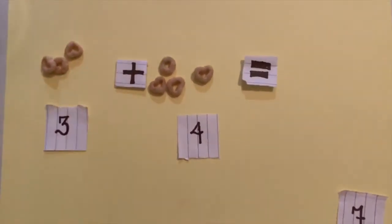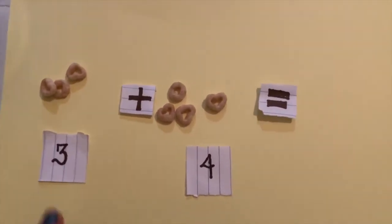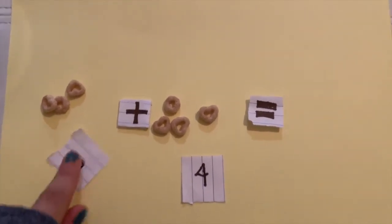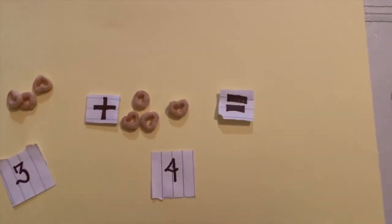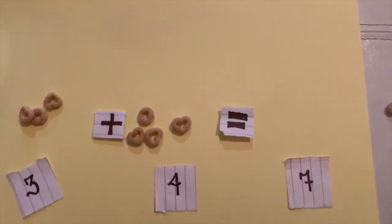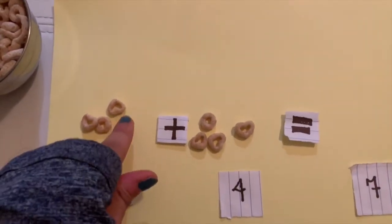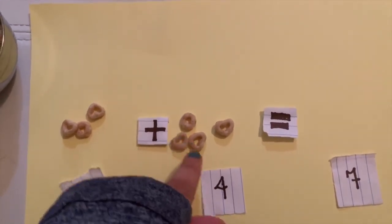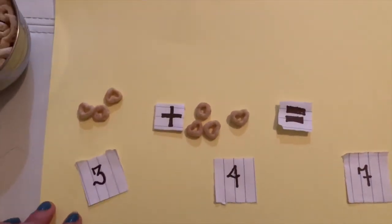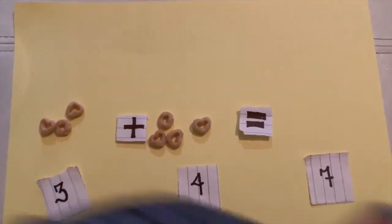How about this time we make sure of our addition? So three plus four equals seven. Let's see, let's make sure. One, two, three, four, five, six, seven. That's right, three plus four equals seven.